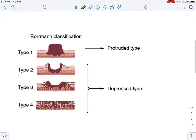There is another way of looking at this classification, which is that because type 1 is a polyp, it looks like it is protruded.